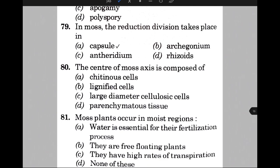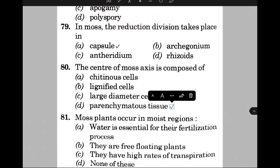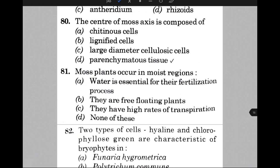Moss plants occur in moist regions because — the answer is A, water is essential for their fertilization process. Two types of cells — hyaline and chlorophyllose green — are characteristic of bryophytes in — the answer is C, that is Sphagnum papulosum.